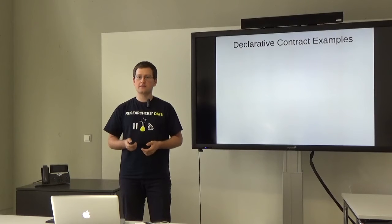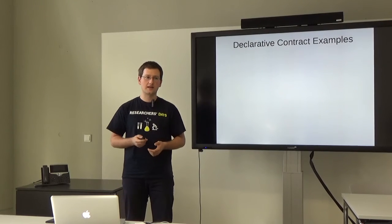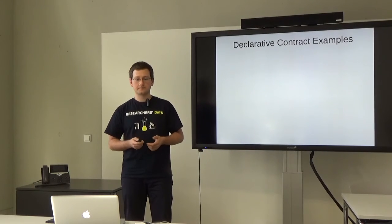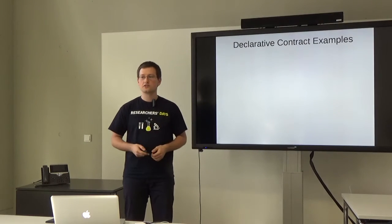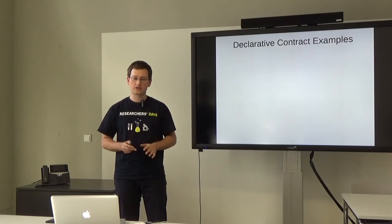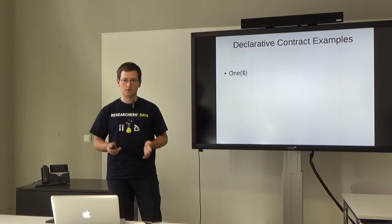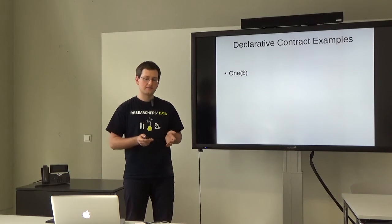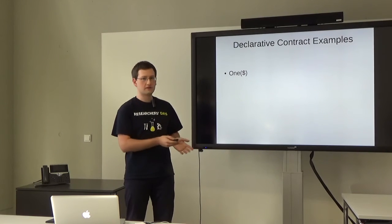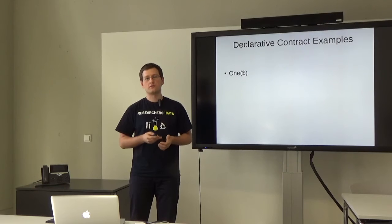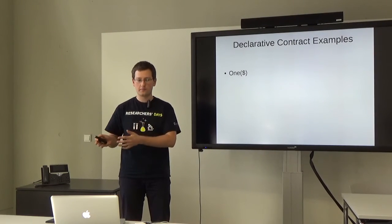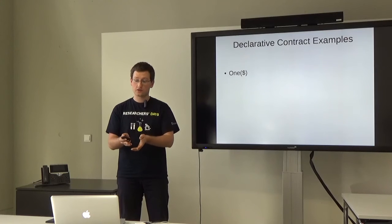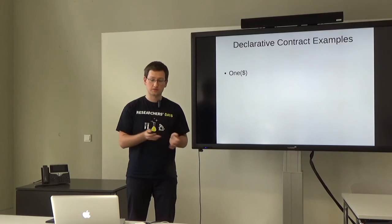Here are some examples of declarative contracts in a language that I and my colleagues have been doing research in this area. The simplest contract, the simplest building block looks like this. It means transfer one dollar from here to there. We assume that the parties are implicit here. There is Alice and Bob, two parties of this contract. And this contract transfers one dollar from Alice to Bob.